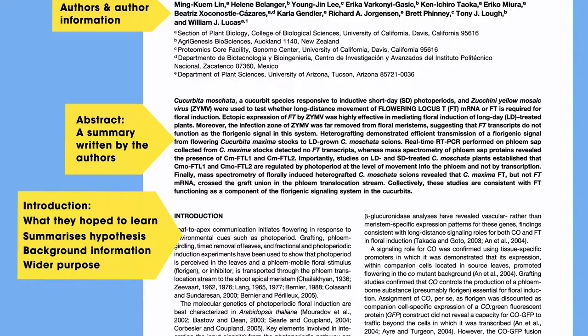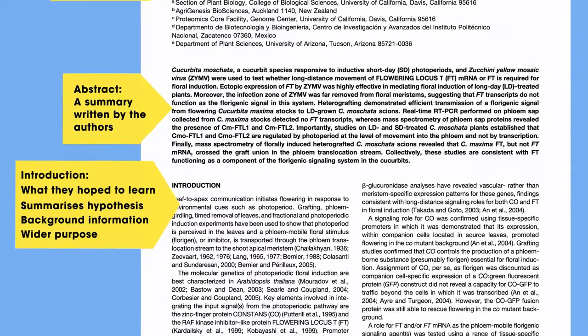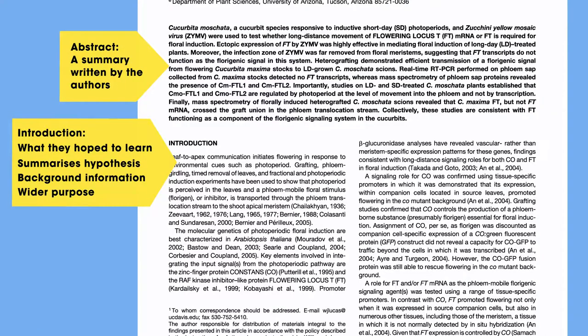The abstract contains the aim or objective, a brief description of the method used, the main results and conclusions. The introduction describes what the writer hoped to learn from the research, summarises the hypothesis and references any background information or work of other scientists that is relevant. It can also discuss the wider purpose of the research and its potential benefits.